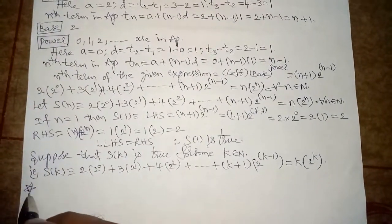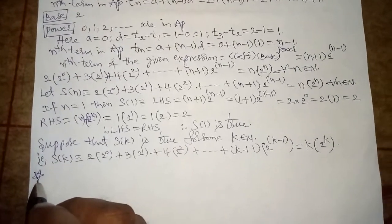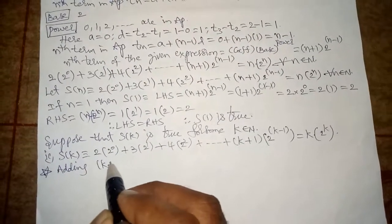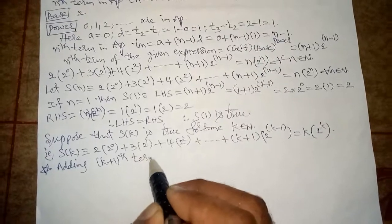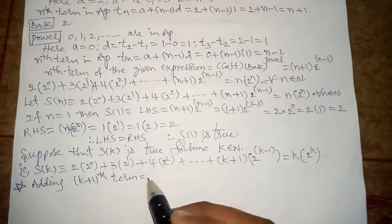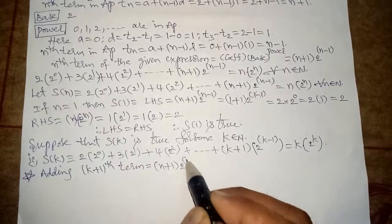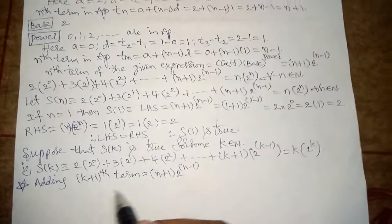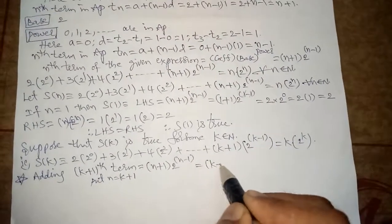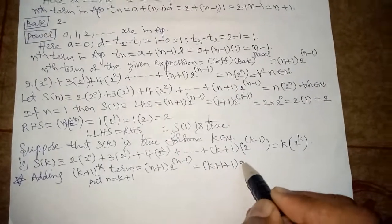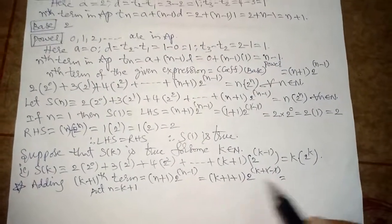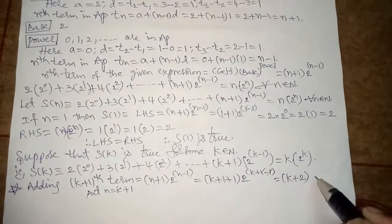After writing S(k), one very important step — I call it the star step. To get the (k plus 1)th term, substitute n equals k plus 1 into the nth term formula, which is (n plus 1) into 2 power (n minus 1). That gives (k plus 1 plus 1) into 2 power (k plus 1 minus 1), which simplifies to (k plus 2) into 2 power k.